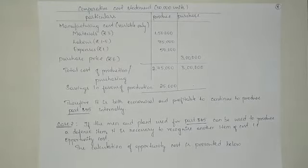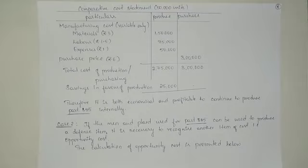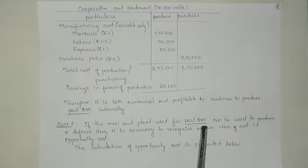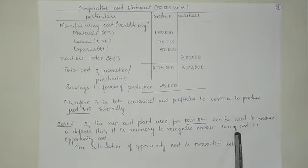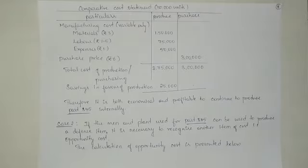In the second situation, if part number 845 is purchased from outside and the same resources used for it are redirected to produce a defense item, we need to recognize an additional item of cost. Since the men and plant used for part number 845 can now be used to produce a defense item, it is necessary to consider the opportunity cost in this situation.